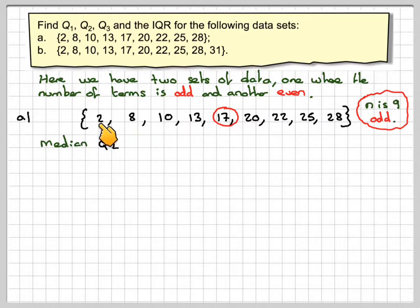One word of warning, the data has to be ranked in order or in ascending order starting from the smallest to the largest. This data has already been sorted. So Q2 is just 17.